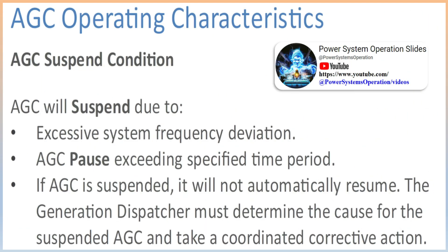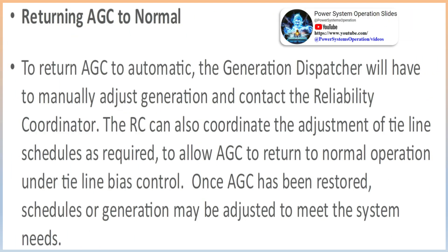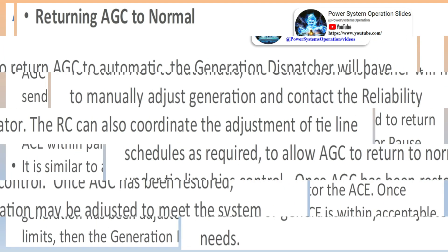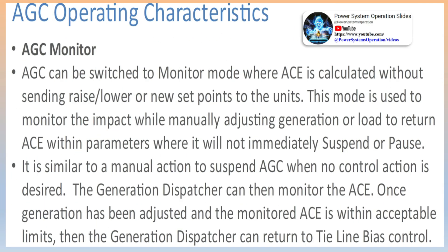Time error correction: interconnection frequency is normally scheduled to a preset value and controlled to that value. The control is imperfect and over time the frequency will average slightly above or below that value. This results in mechanical electric clocks getting their power from the grid developing an error relative to true time. The EMS system allows for a coordinated time correction by setting up a frequency offset. The setpoint of all interconnected operating areas must be changed to a value which will correct the accumulated time error. Normally the time error is allowed to collect to a predetermined error value, then a coordinated time error correction is started by setting in a new system frequency setpoint. The accumulated time difference is calculated between time based on interconnection frequency and a universal standard of extremely accurate time.